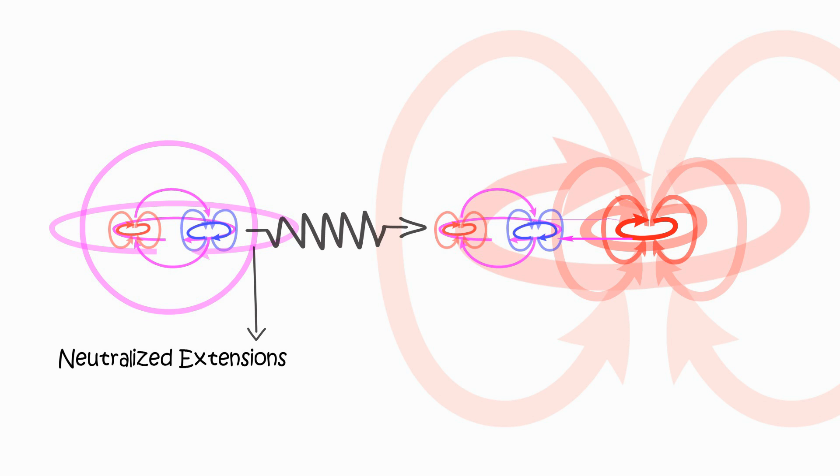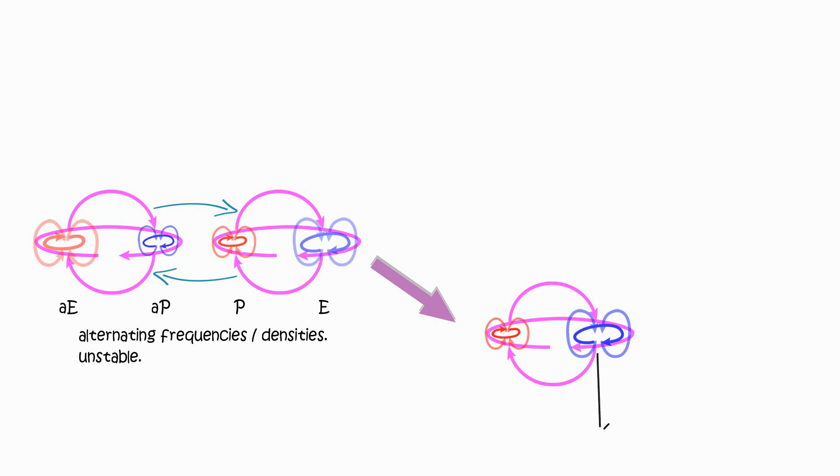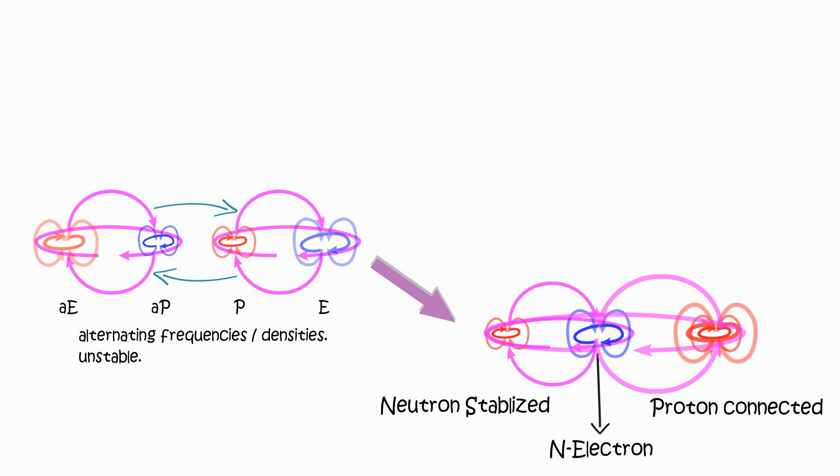When proton meets an unstable neutron at nucleus distance, N electron and proton attract. An N electron borrows momentum from N proton to bind proton. Neutron is stabilized when connected to a proton, with N electron being the dominant side.